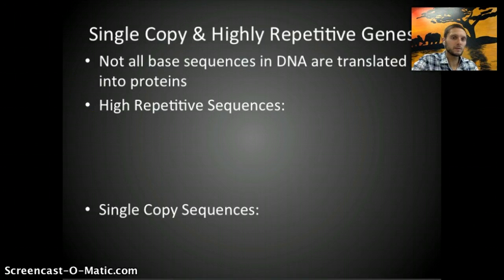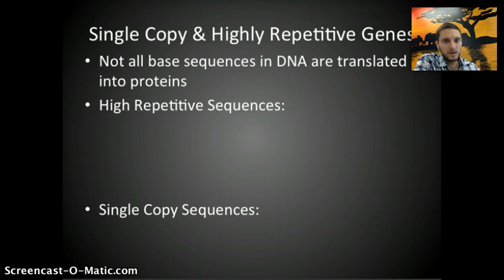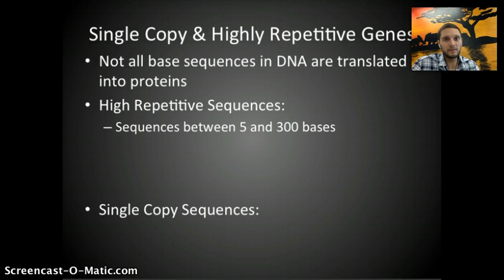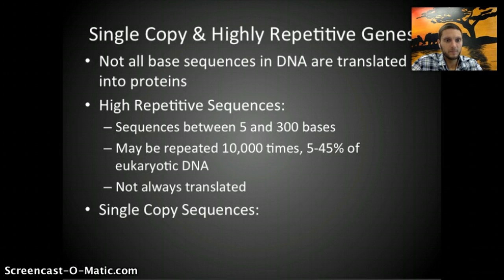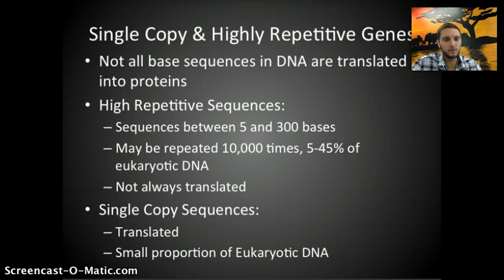There's also a difference between single copy and highly repetitive genes. A number of genes are repeated numerous times in the genome of different organisms, and not all DNA base sequences are translated into proteins. Highly repetitive sequences are usually between about 5 and 300 nucleotides, can be repeated nearly 10,000 times, and can constitute about 5 to 45% of total DNA in a eukaryotic organism. They're not always translated. Single copy sequences, on the other hand, are translated, and represent a very small proportion of eukaryotic DNA.